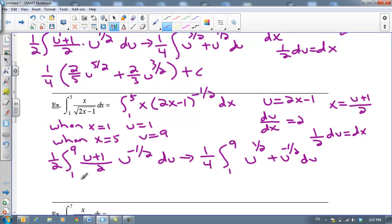So our anti-derivatives will be 2/3 u to the 3/2 plus 2 u to the 1/2, make sure that's a u there. We're going to evaluate this from 1 to 9.